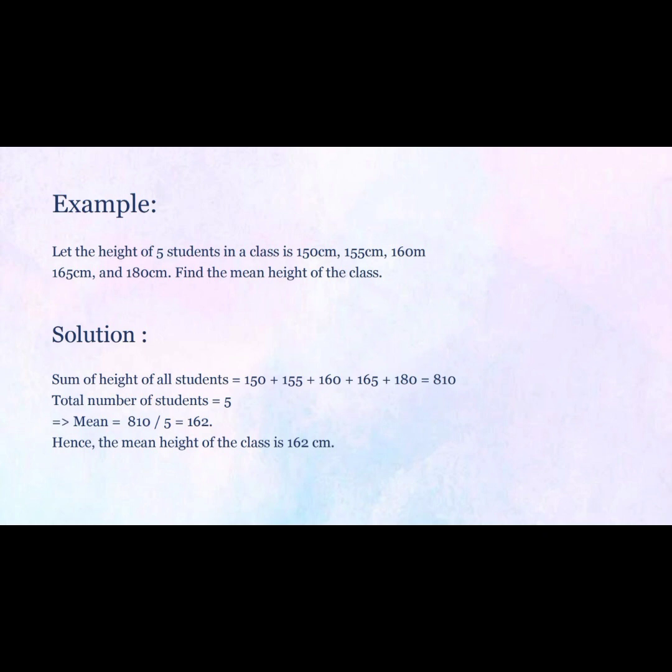Example: Let the heights of five students in a class be 150 cm, 155 cm, 160 cm, 165 cm, and 180 cm. Find the mean height of the class. Solution: Sum of heights of all students = 150 + 155 + 160 + 165 + 180 = 810. Total number of students = 5. Mean = 810 ÷ 5 = 162.